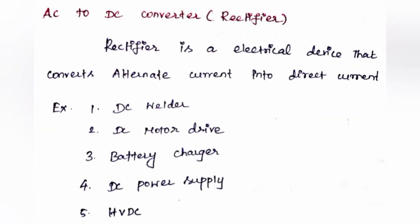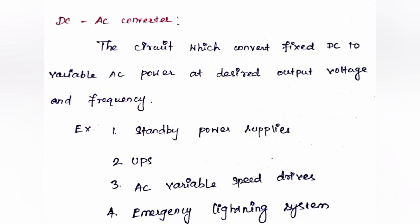AC to DC converter - Rectifier. A rectifier is an electrical device that converts alternating current to direct current. We give input as fixed AC and get required output as variable DC. Some electrical devices require DC power, like laptops. So we need to change the voltage waveform from AC to DC. What are the applications that require AC to DC converters? DC welders, DC motor drives, battery chargers, DC power supplies, and HVDC. These are all the applications that require AC to DC converters.